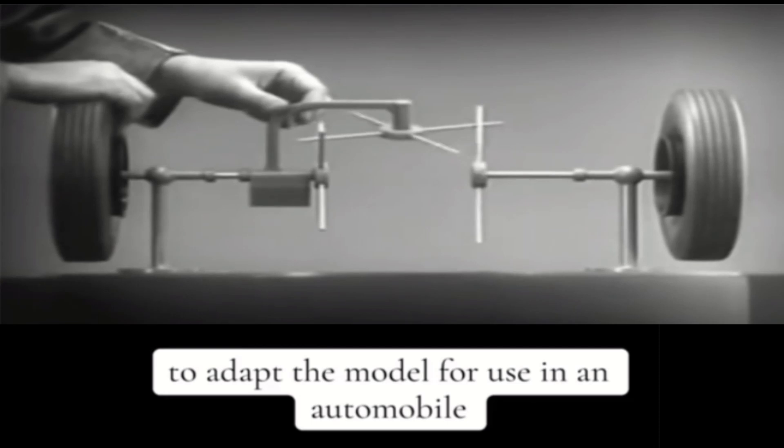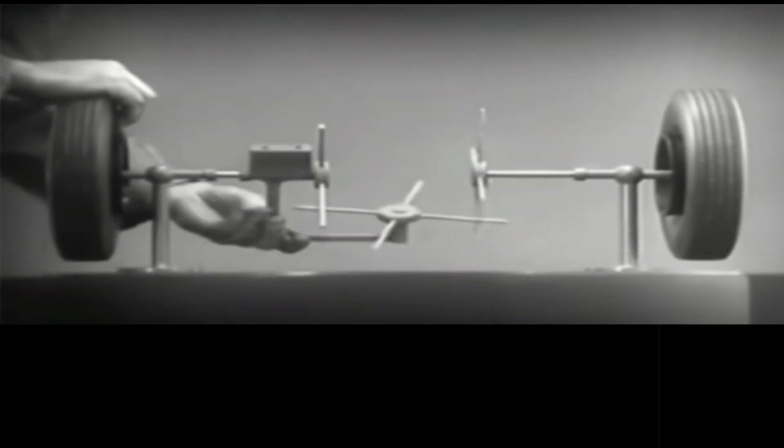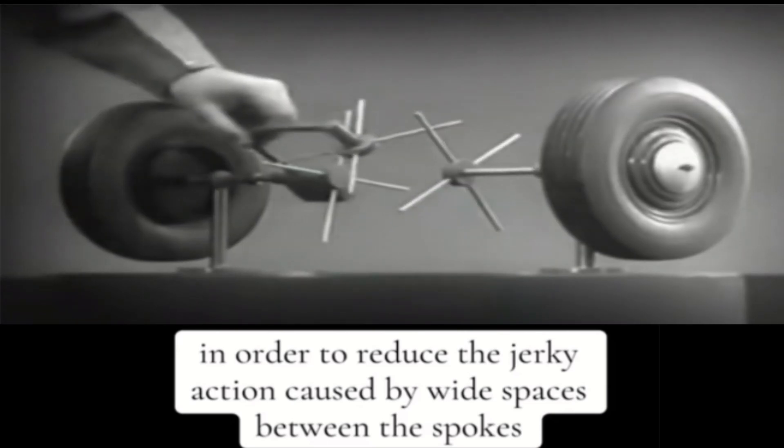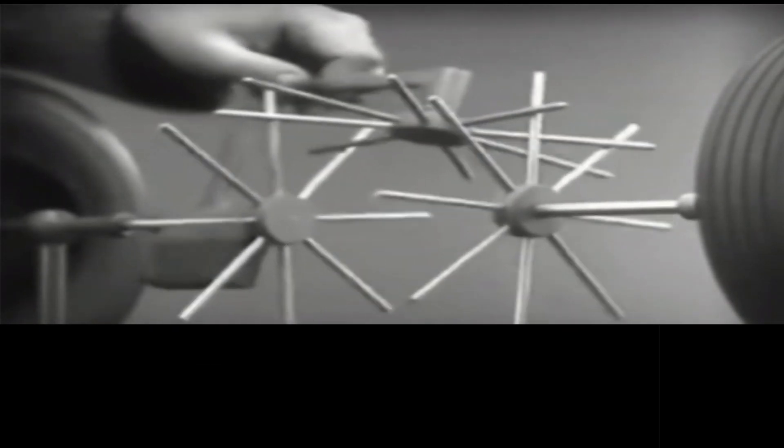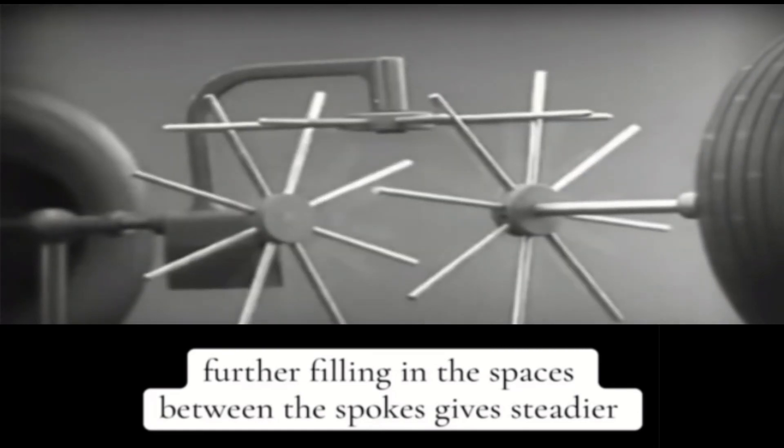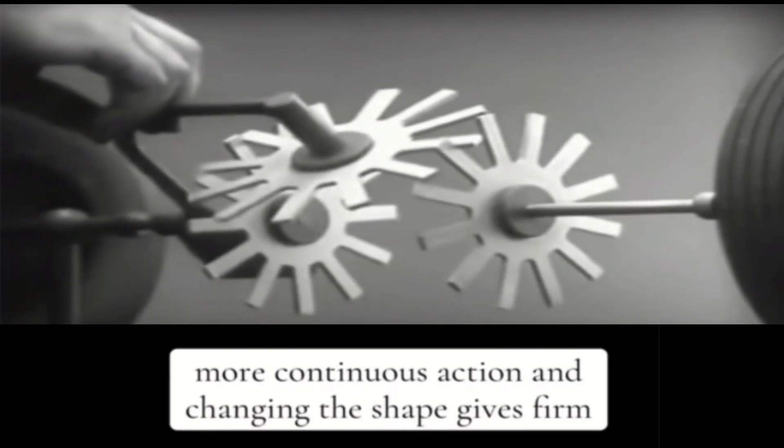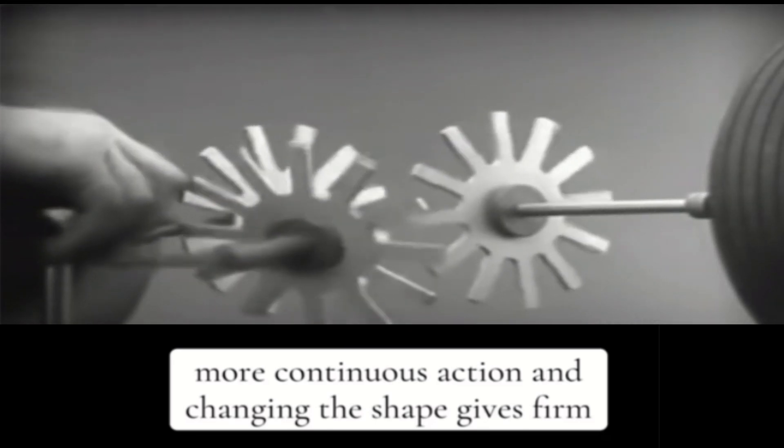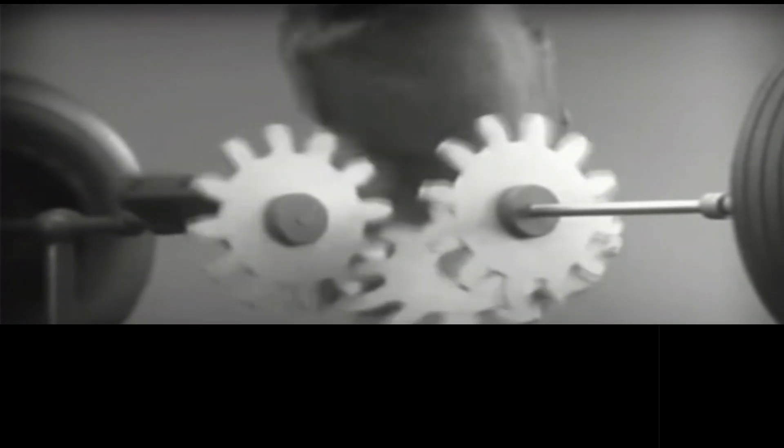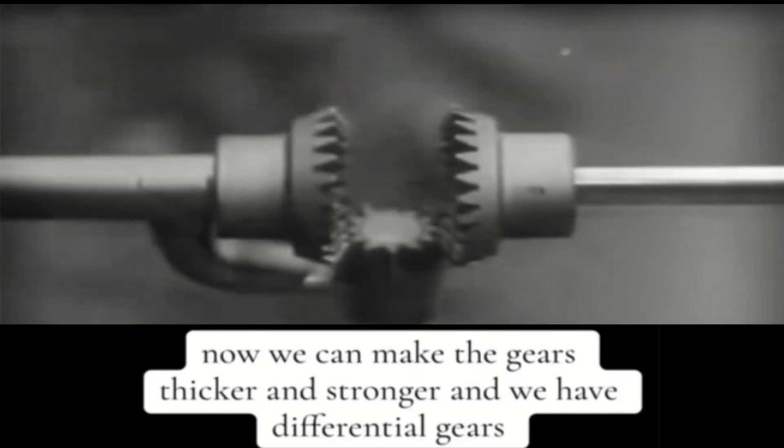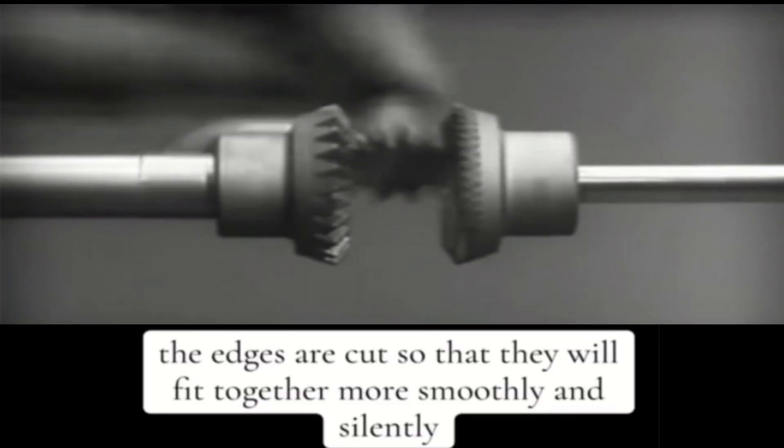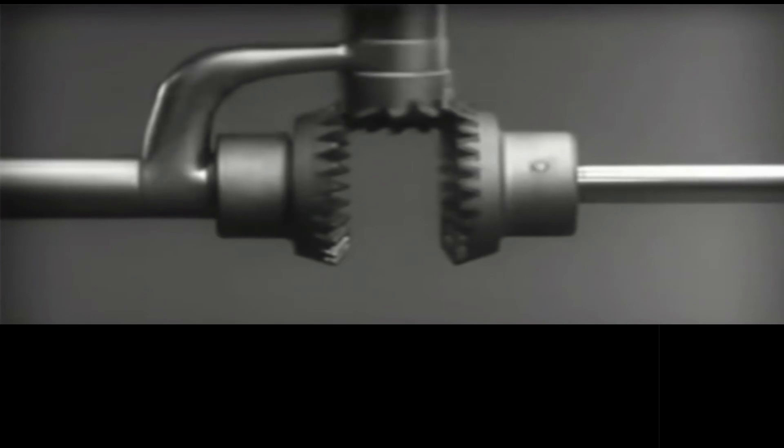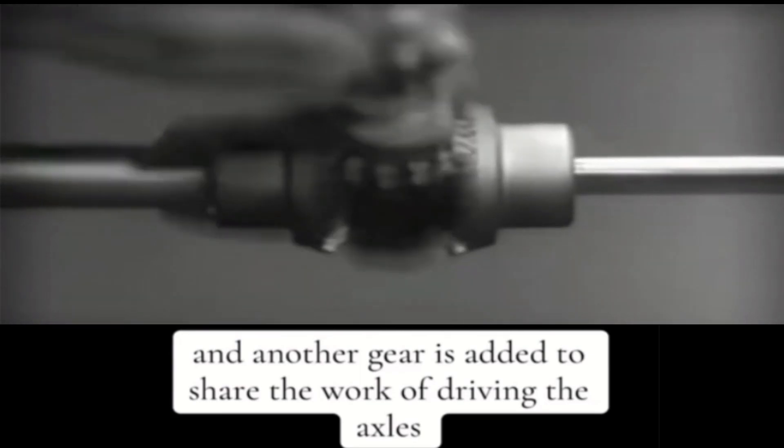To adapt the model for use in an automobile, we will have to make a few changes. In order to reduce the jerky action caused by wide spaces between the spokes, we will put in more spokes. Further filling in the spaces between the spokes gives steadier, more continuous action. And changing the shape gives firm, constant contact. Now we can make the gears thicker and stronger. And we have differential gears. The edges are cut so that they will fit together more smoothly and silently. And another gear is added to share the work of driving the axles.